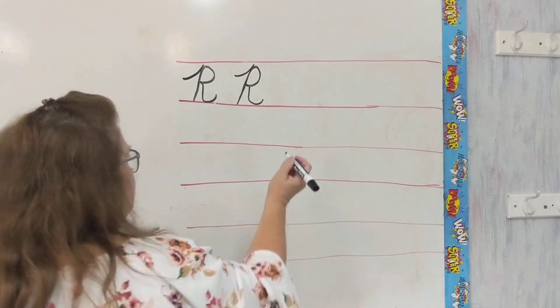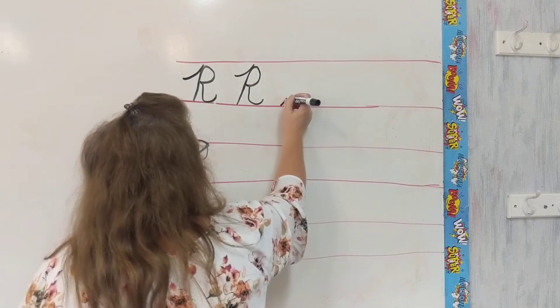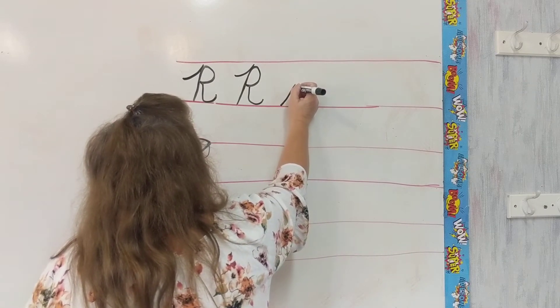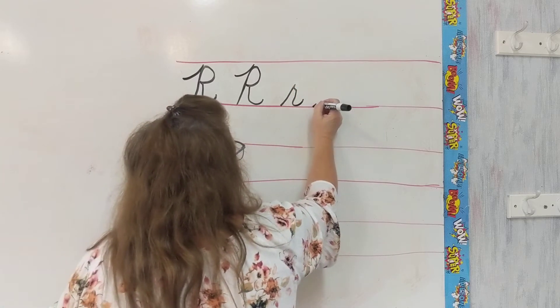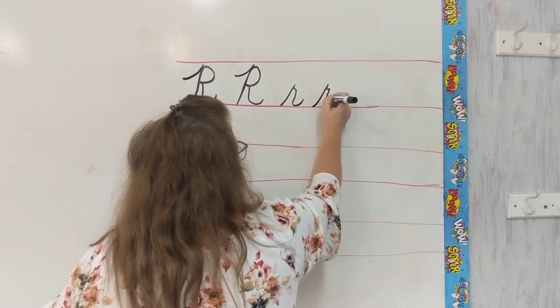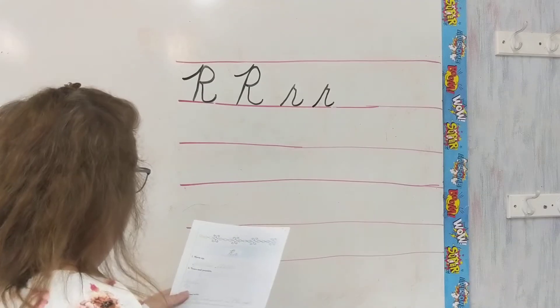And to make our little r, we start on the floor, we go about halfway up, retrace back down, turn, and go down, and swing up. That is our capital R. Capital R kind of looks like it doesn't know which way it wants to go.